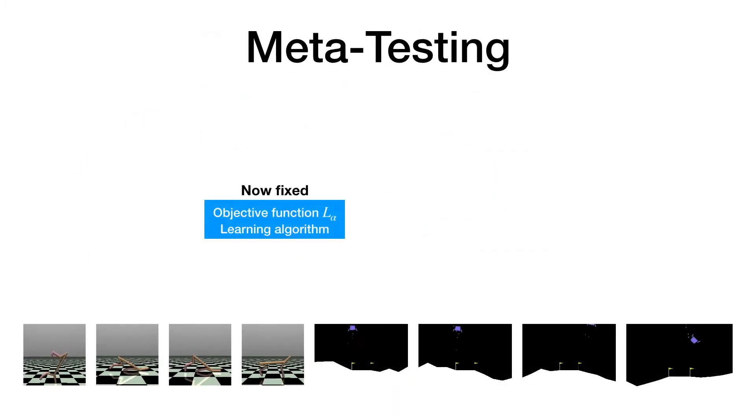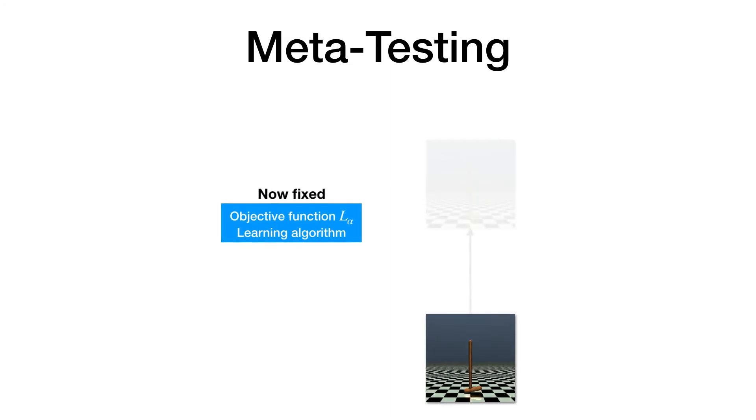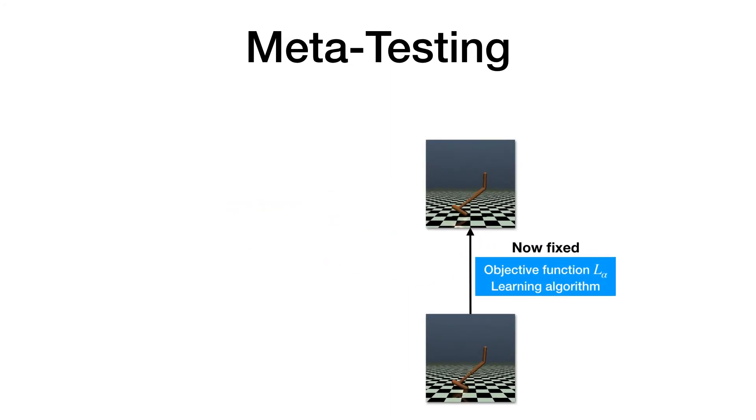After we have meta-trained an objective function, we can discard all current policies and proceed with meta-testing. We initialize a new RL agent from scratch and place it in a new environment. Instead of using a human-engineered algorithm, we use the meta-learned algorithm to improve the policy.